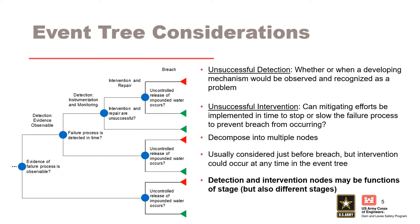This node considers the likelihood that human efforts to detect and stop or slow the internal erosion process from breaching the embankment fail to work. Unsuccessful detection and intervention can be assessed as a single node or can be decomposed into multiple nodes. Intervention nodes may be functions of different stages. For example, observable evidence of seepage or leakage may be obscured by vegetation or tailwater inundation for higher pools.